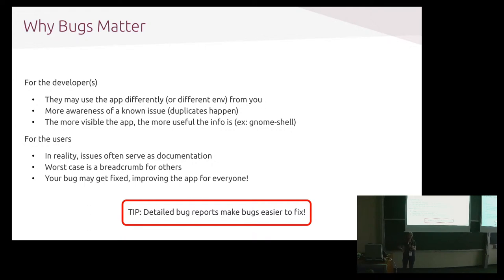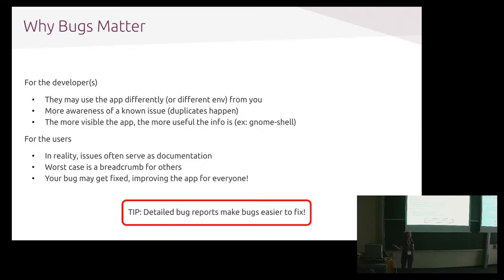For users, issues can serve as documentation. It's not ideal — we want to have perfect documentation everywhere — but if you find an issue and file it, then if someone else stumbles across that, they might find the issue too and say, oh yeah, it affects me too. Or the solution might be in the comments; it might be a workaround that can help someone else past that issue. So worst case, it's a breadcrumb for other users. And of course, the bug may be fixed and then it improves the experience for everyone.